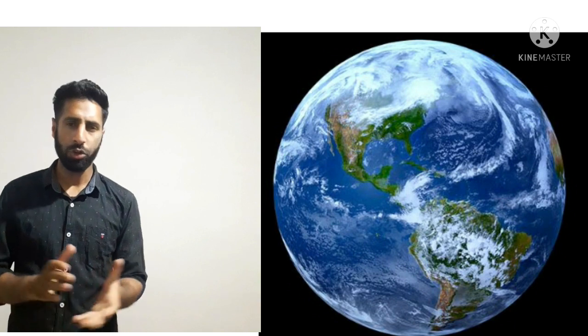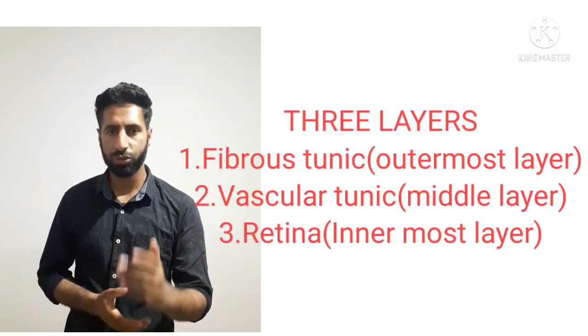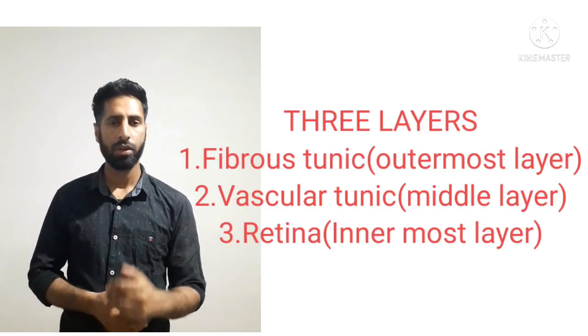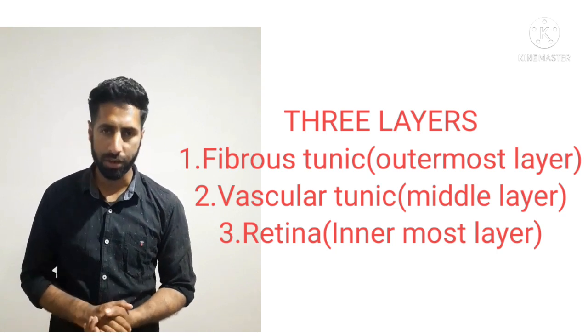This human eye is made of three different layers: fibrous tunic, vascular tunic, and the retina.